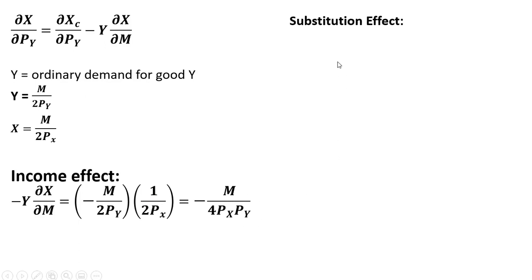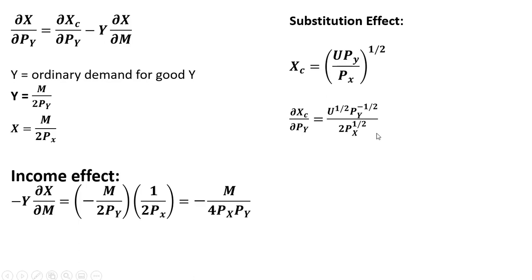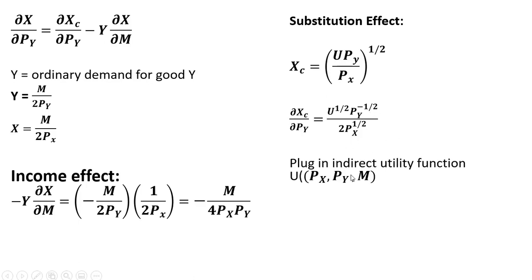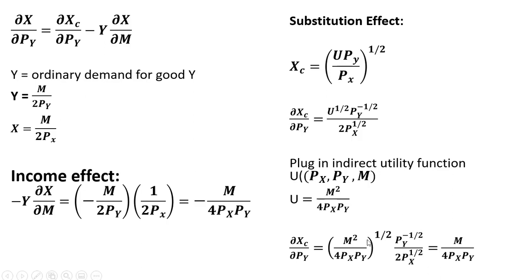To get the substitution effect, we're going to take the partial derivative of the compensated demand for good X with respect to the price of good Y. Here's our compensated demand for good X. Taking the partial derivative with respect to the price of good Y, we get the following result. The 2 in the denominator comes from bringing the 1/2 exponent down in front, and we subtract 1 from the exponent on the price of good Y term. The next step is to plug the indirect utility function in for U. Now plugging that in for U — we do have to take the square root since the indirect utility function is raised to the 1/2 power — and simplifying all of this down, you get the following.